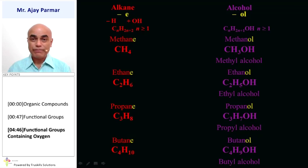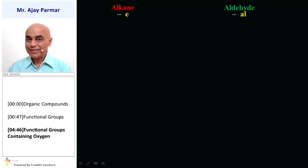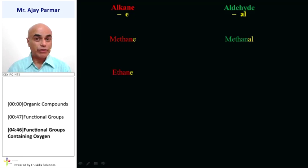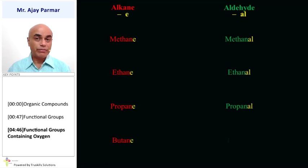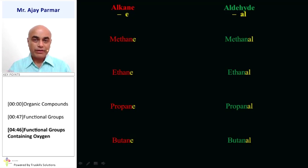Now let us look at the names of aldehydes with respect to alkane. Here also the letter E is substituted by AL. That means methane becomes methanal, ethane becomes ethanal, propane becomes propanal, and butane becomes butanal. It is very easy to follow the principles when they follow a law. The rule here is replacing E with AL to get the name of the respective aldehyde.